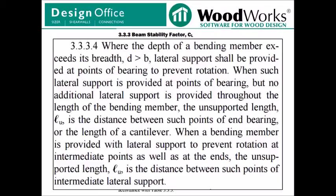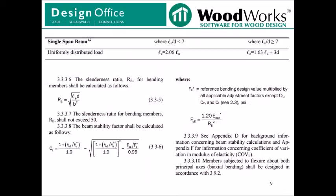Where the depth of a bending member exceeds the breadth, d is greater than b, lateral support shall be provided at points of bearing to prevent rotation. When such lateral support is provided at points of bearing, but no additional lateral support is provided throughout the length of the bending member, the unsupported length LU is the distance between such points of end bearing or the length of a cantilever. When a bending member is provided with lateral support to prevent rotation at intermediate points as well as at the ends, the unsupported length LU is the distance between such points of intermediate lateral support. So what we're dealing with here is features related to how we calculate LU. Just to be clear, LU is used to calculate LE, which is then used to calculate the slenderness ratio RB, which affects the resulting CL factor applied to a beam's bending moment resistance.